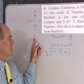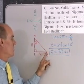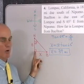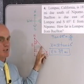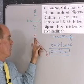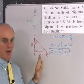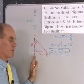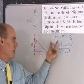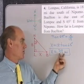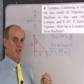So Lompoc, California is due south of Nipomo, and Buellton is due east of Lompoc. Buellton is also south 65 degrees east from Nipomo. From that information, I can find how far Buellton is from Lompoc — 39 miles — using a tangent ratio. Lompoc, California, by the way, is where I started my teaching career.